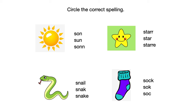The first picture is sun — s-u-n is the correct spelling. If you got that right, give yourself a check mark. Next we have star — spelled s-t-a-r. If you have that correct, give yourself a check mark. The next picture at the bottom left is snake — s-n-a-k-e. If you got that right, give yourself a check mark. And the last picture is sock — s-o-c-k. Give yourself a check mark.